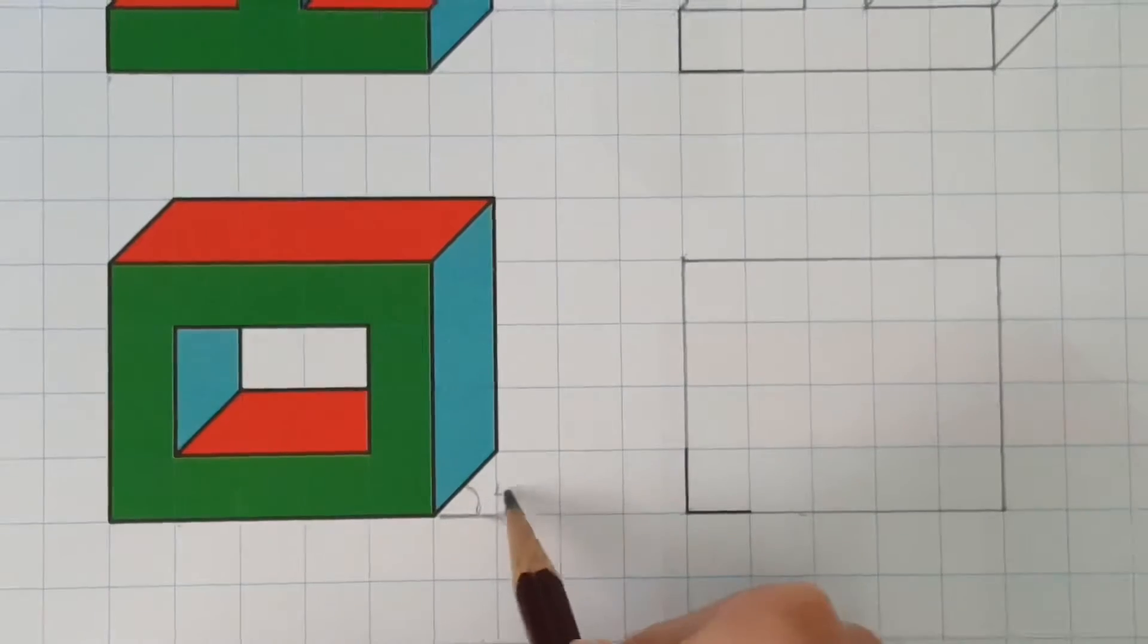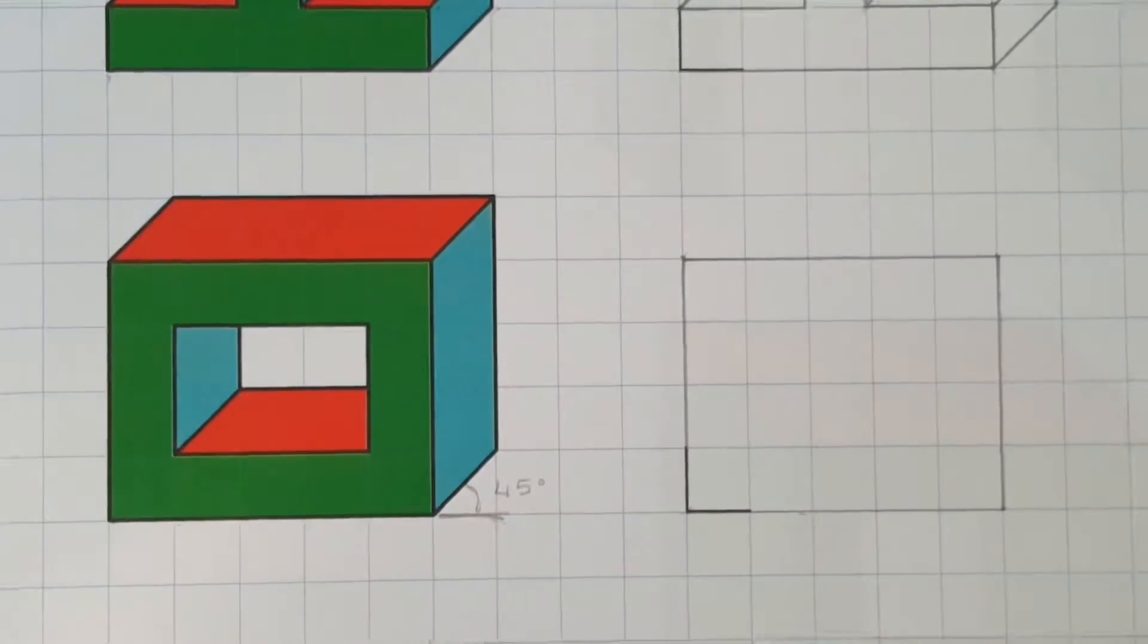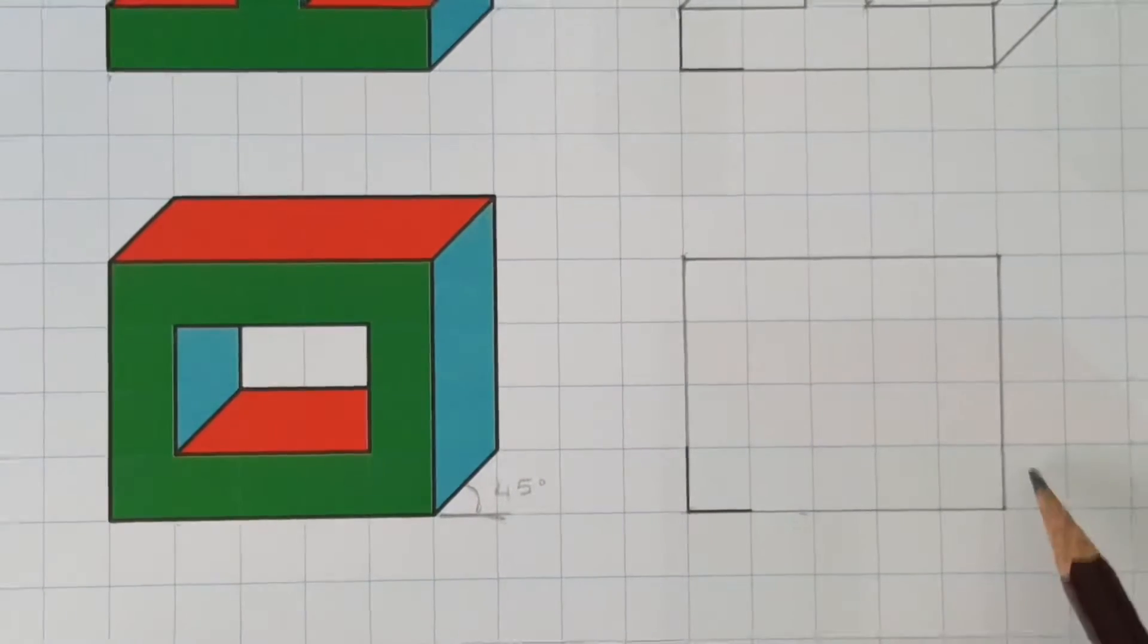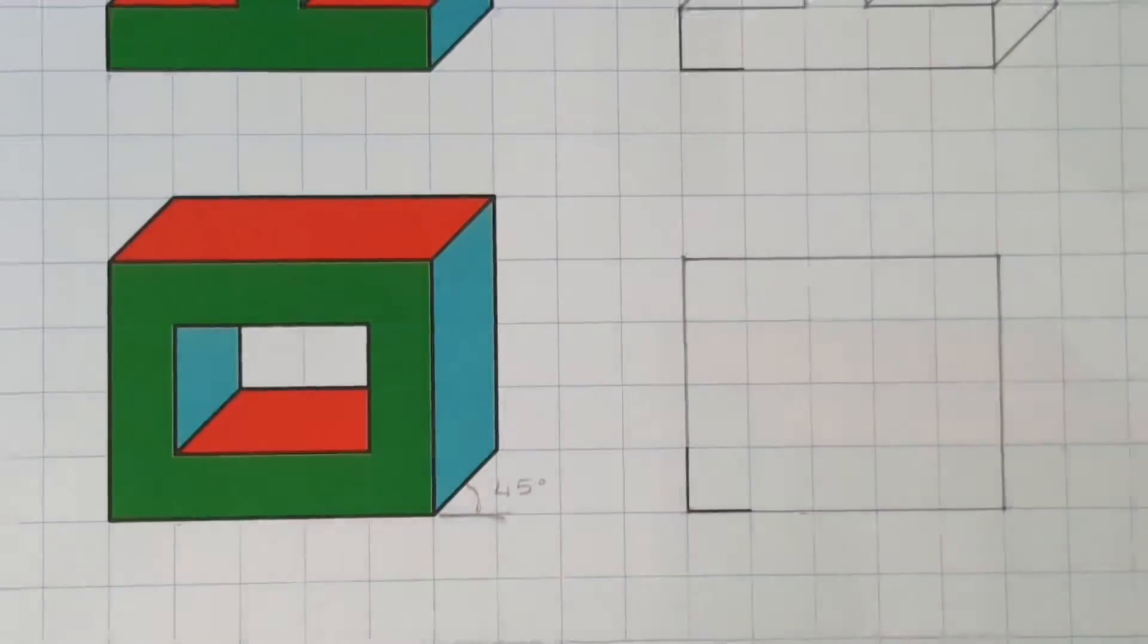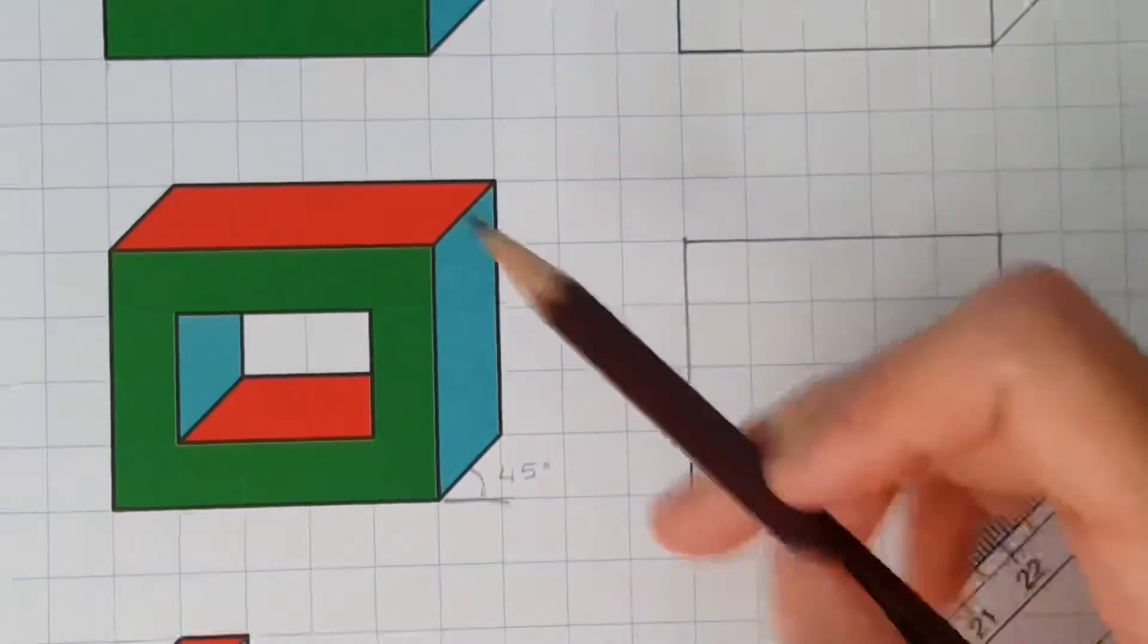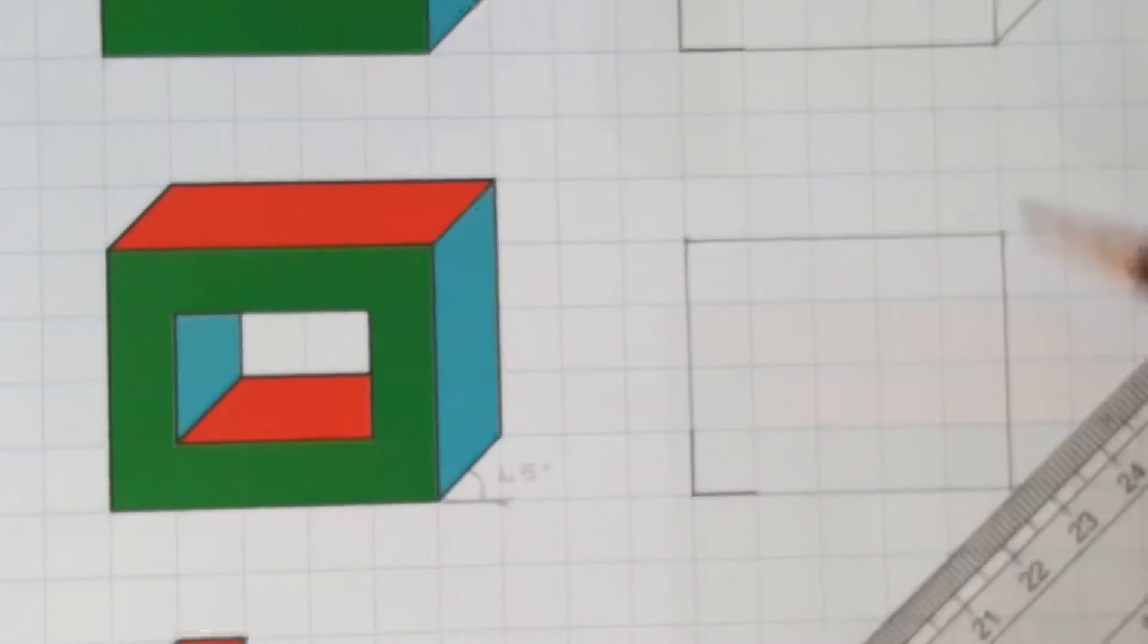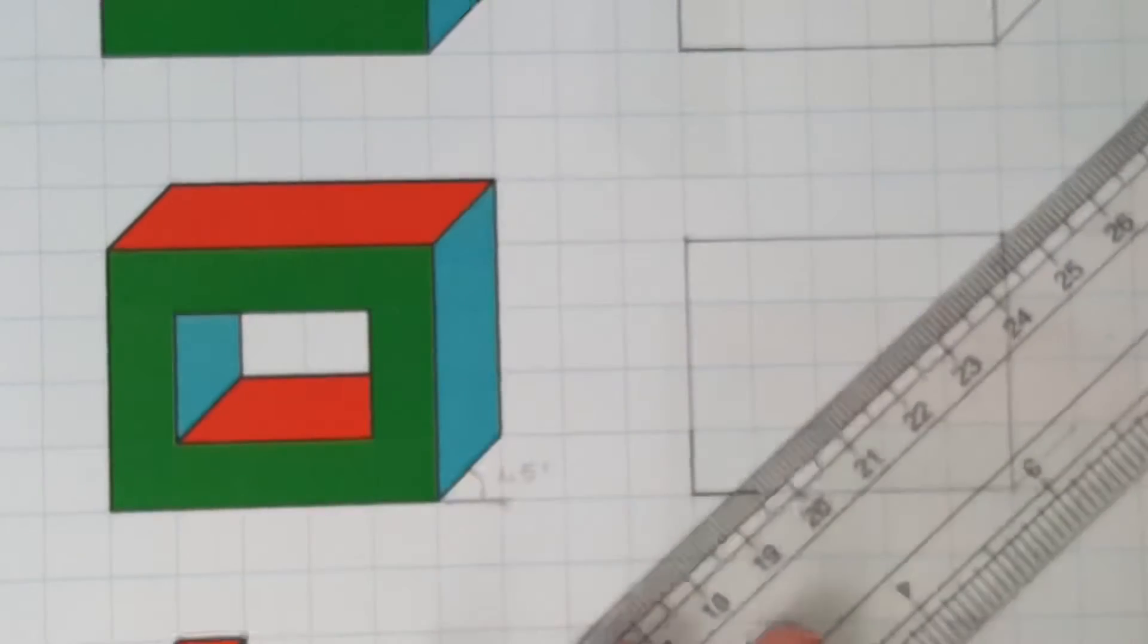And now let's draw these 45 degree angled lines. Now the thickness of this entire shape is just one square to the upper right. So let's do that for all of the visible corners.